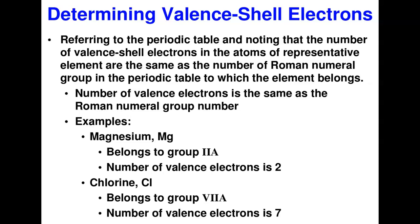How do we determine the number of electrons in the valence shell of an element? We refer to the periodic table. For representative elements — groups 1A, 2A, 3A, 4A, 5A, 6A, 7A, and 8A — the number of valence shell electrons equals the Roman numeral group number.